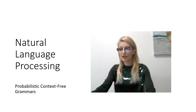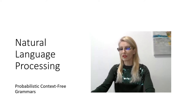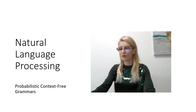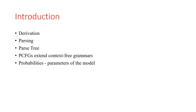The standard version of CKY operates only on context-free grammars given in Chomsky normal form. However, any context-free grammar may be transformed to a Chomsky normal form grammar expressing the same language. Let's start by recalling some basic definitions. Derivation is the process of recursive generation of strings from a grammar. Parsing is finding a valid derivation using an automaton. And a parse tree is the alignment of the grammar to a sequence.